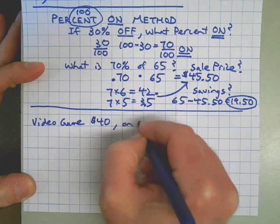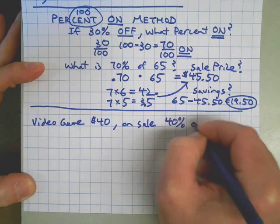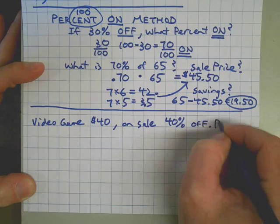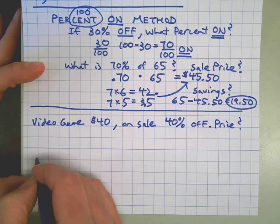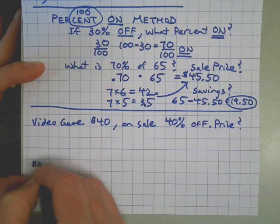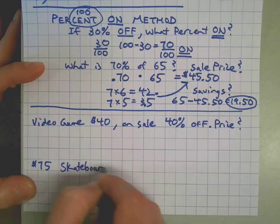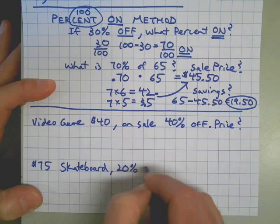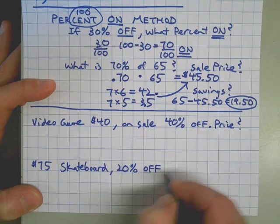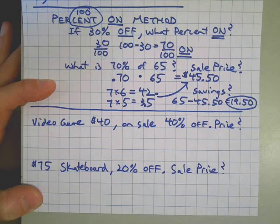Let's make up a couple situations here. Let's say we have a video game, it's forty dollars, and it's on sale - they're having a big forty percent off sale. What's the sale price? Another example: let's say we have a seventy-five dollar skateboard, which is a good price, but twenty percent off. What's the sale price? All right, hit the pause button, do these problems, and then when you come back I will show you how they worked.